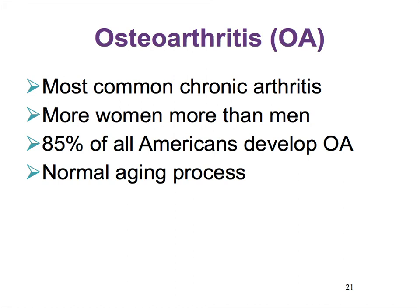Osteoarthritis is the most common form of chronic arthritis, and it's much more prominent in females than in males. Most of us develop it. The majority of us already start forming osteoarthritis as teenagers, when we're athletic—perhaps doing a lot of running, playing football, tennis, or dancing ballet.